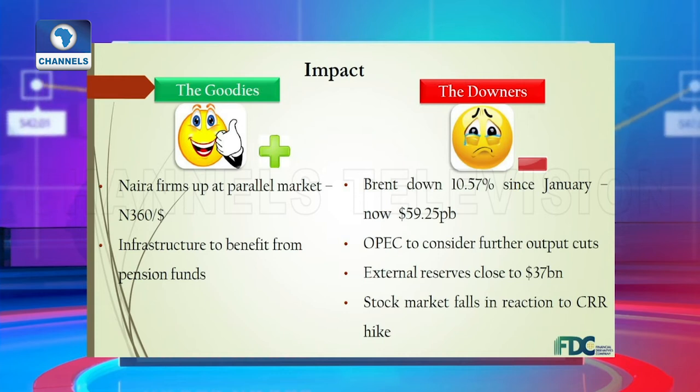OPEC members are under pressure. Nigeria has finally complied with its OPEC quota at 1.7 million barrels, and might be forced to lower its output to 1.6 million. If OPEC decides to cut output further, what would be the implications of that?